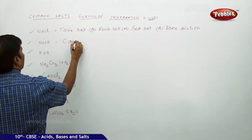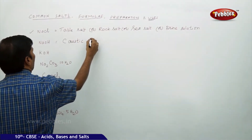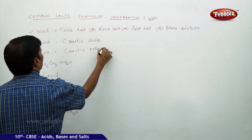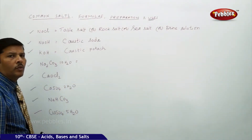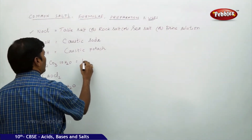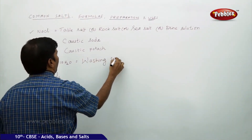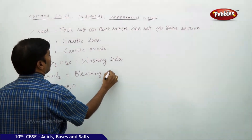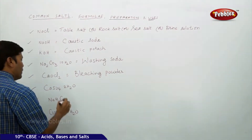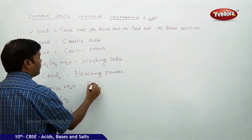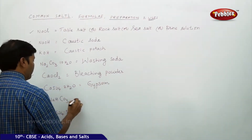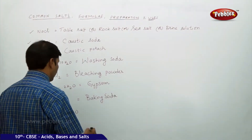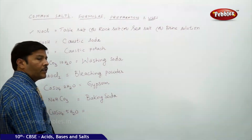KOH is called caustic potash. Na2CO3·10H2O is called washing soda. CaOCl2 is called bleaching powder. CaSO4·2H2O is called gypsum. NaHCO3 is called baking soda.